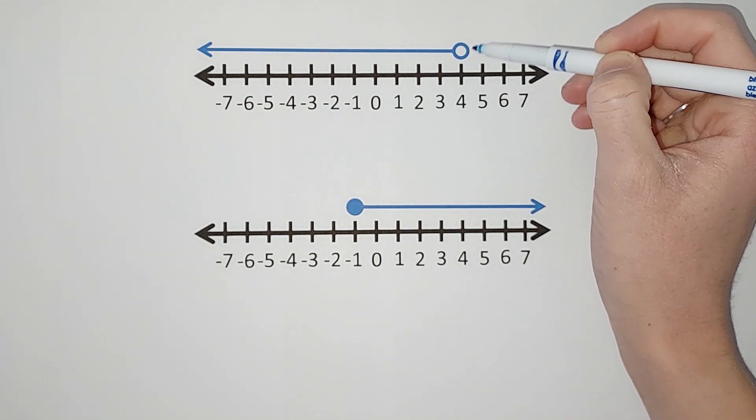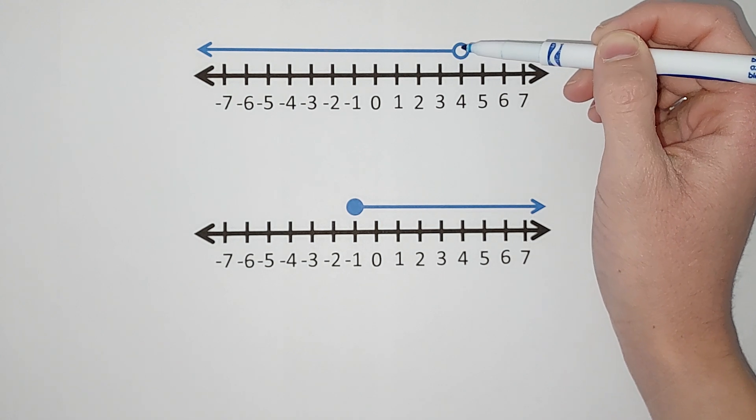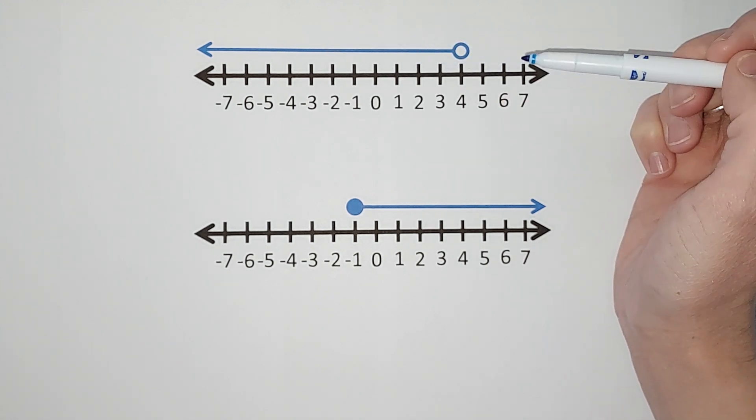So we need to look at where our dot is, what number it's above, if it's an open or closed circle, and then which way the arrow goes.